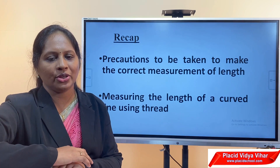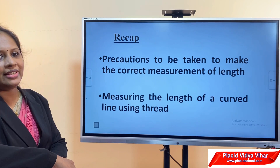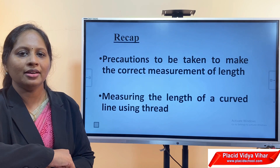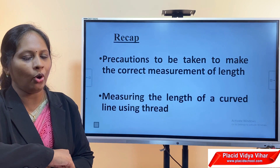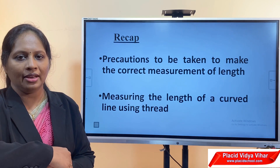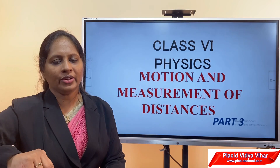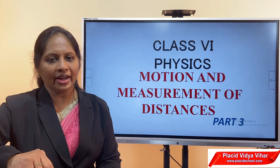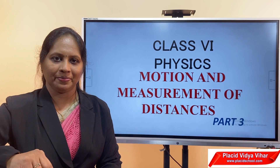We have come to the end of this session. Today we have seen the precautions to be taken while measuring the length of an object — there are three precautions. We have also seen how to measure the length of a curved line using a thread. You can do question number 7 on page 106 in your textbook as homework. Thank you.